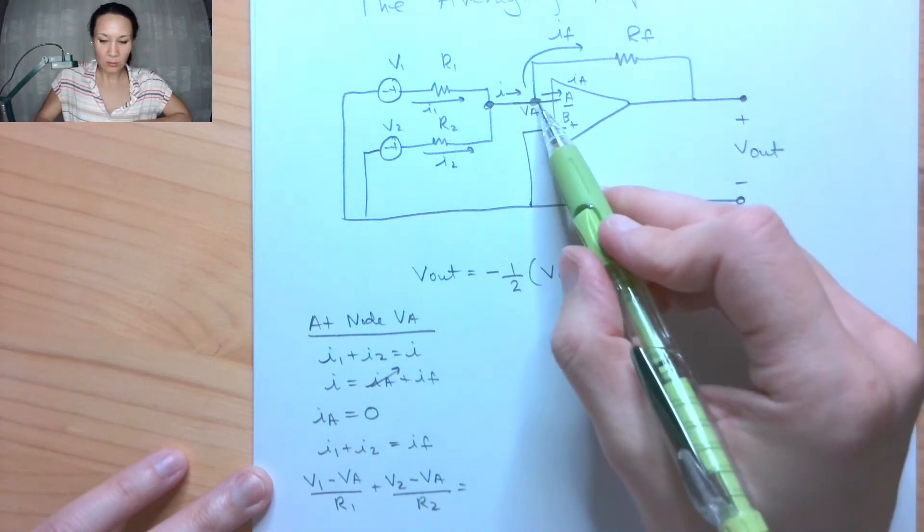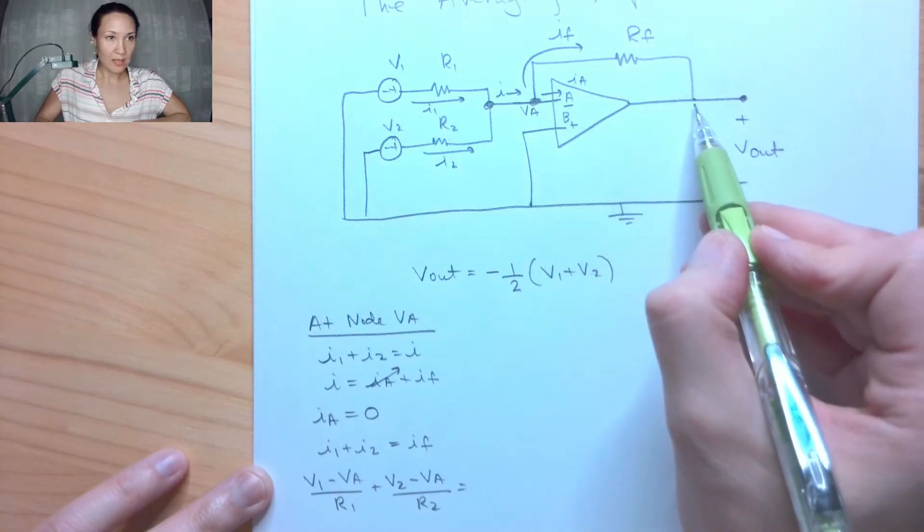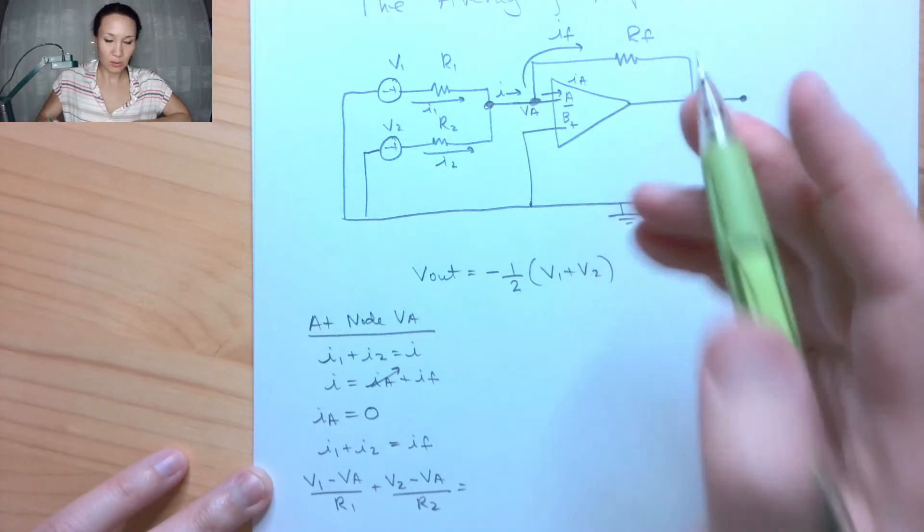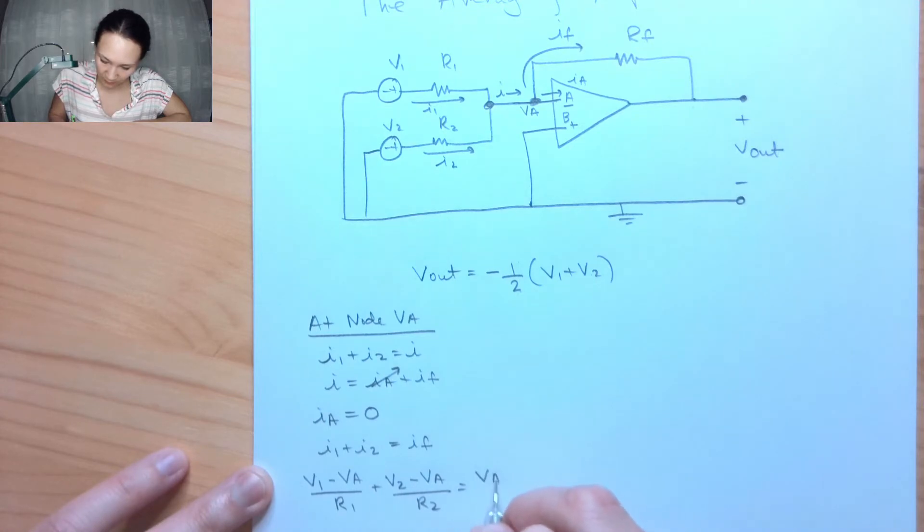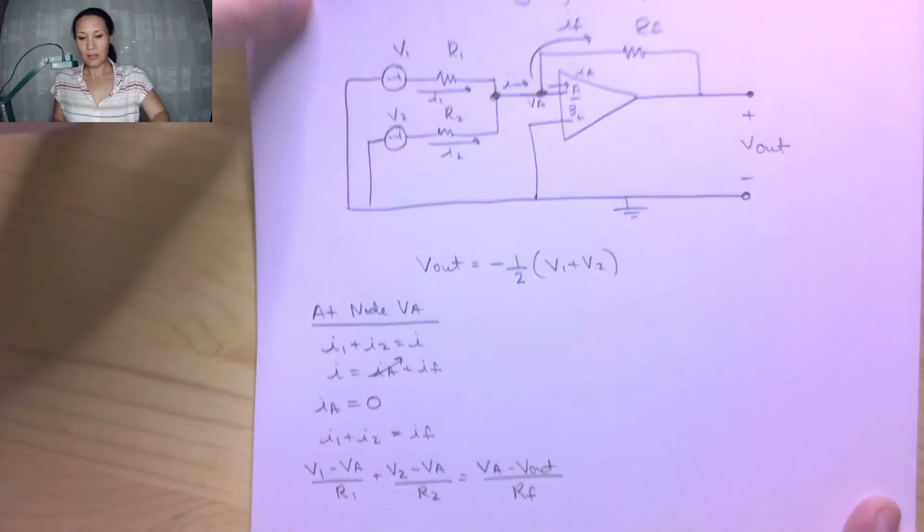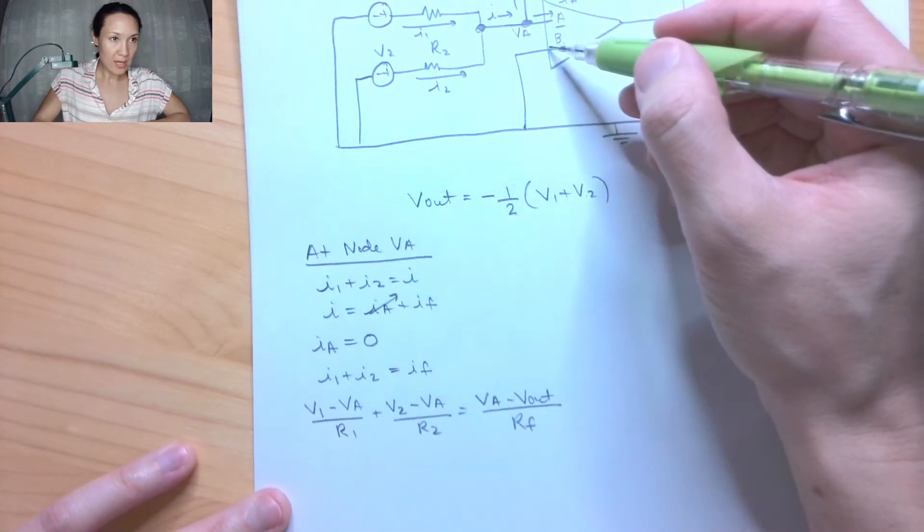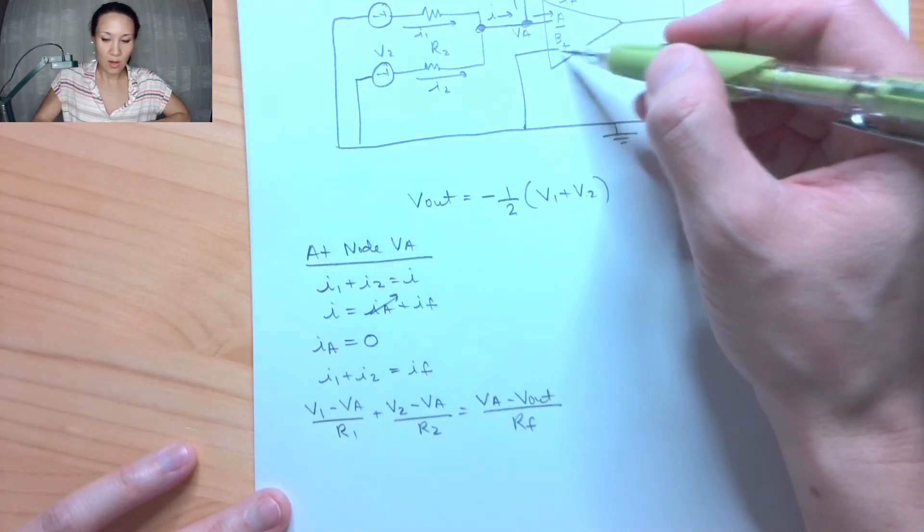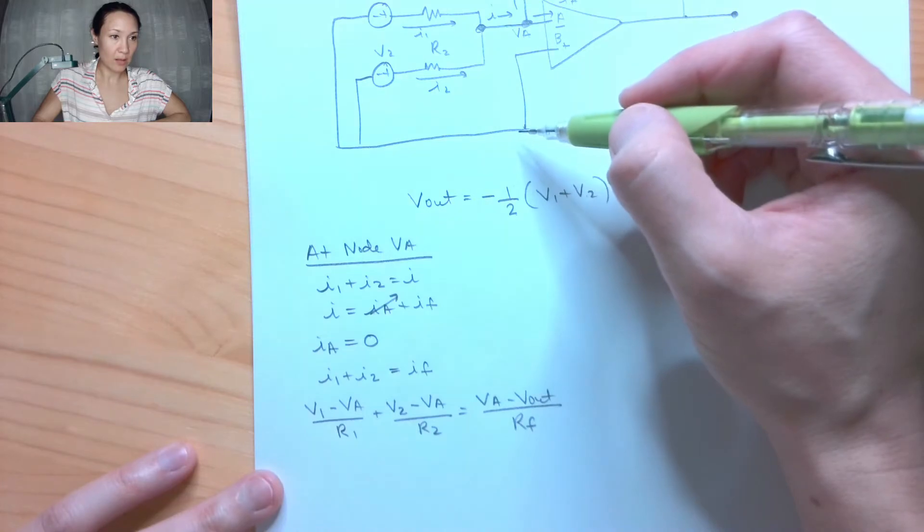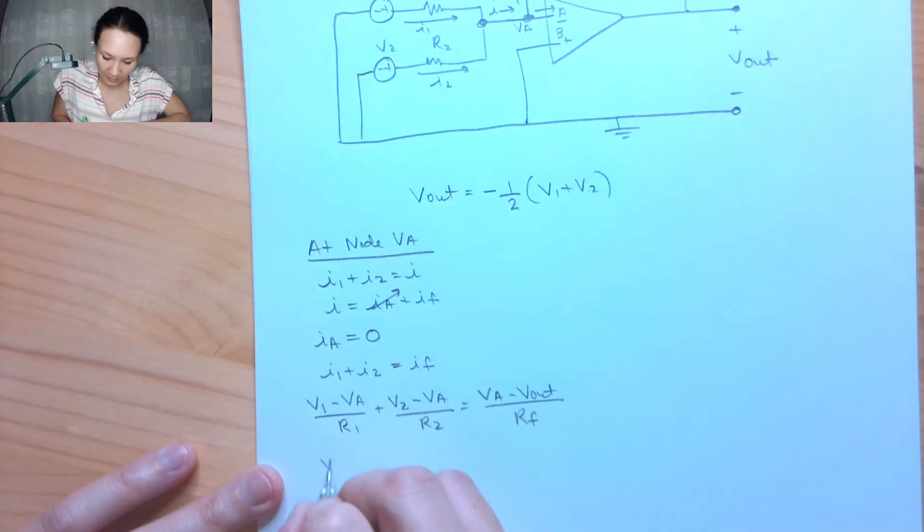And then my IF, I can replace this with VA minus Vout over the resistor between, which is Rf. VA minus Vout over Rf. So now I get to use the fact that this B input here to my op-amp, this non-inverting input, is connected directly to ground.